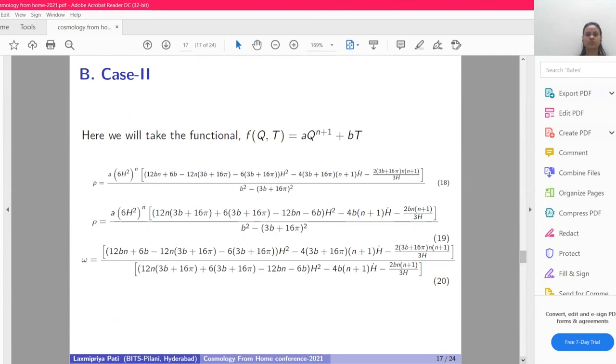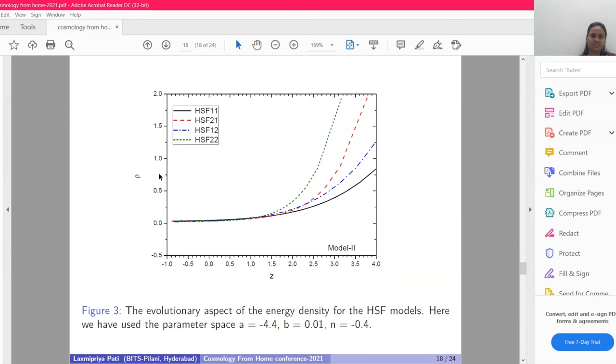Next, I'm coming to case 2. In case 2, we've taken f(Q,T) equals aQ^(n+1) plus bT. By taking hybrid scale factor and putting this value in our previous equation, we got ρ, p, and the equation of state parameter. When we draw the graph, we see the energy density is positive throughout the range. At early time, all are coming from different positive regions, and at late time all graphs tend to zero. Here we take a equals minus 4.4, b equals 0.01, and n equals minus 0.4.